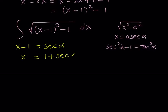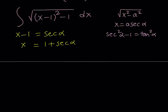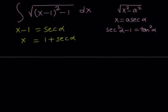dx is going to be found by differentiating the function on the right hand side and multiplying it by d alpha. The derivative of 1 is 0. The derivative of secant — which is kind of a tricky one — is secant alpha times tangent alpha, and then we multiply by d alpha.